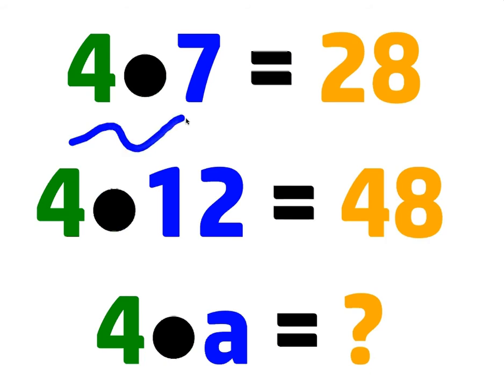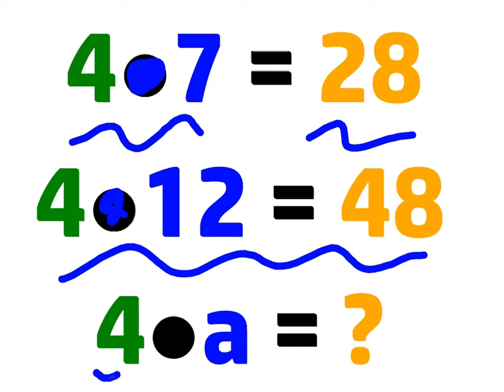Okay, so suppose we have 4 times 7, which is 28. Remember that dot means multiply, or 4 times 12, that gives us 48. Again, we talked about this before, what's 4 times A?